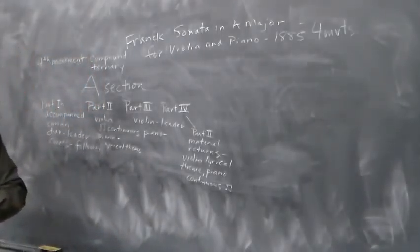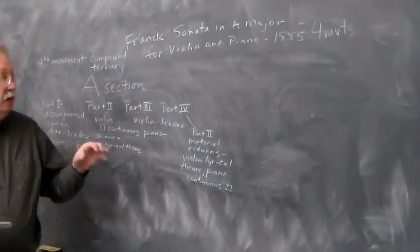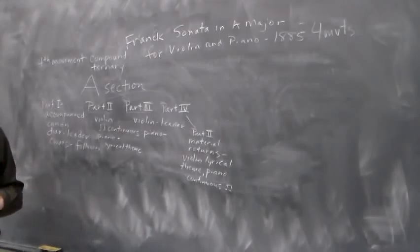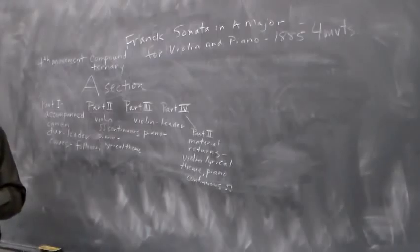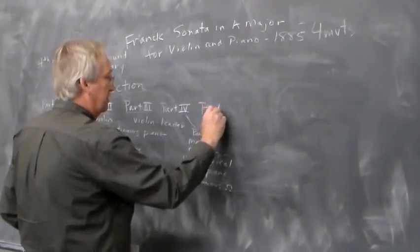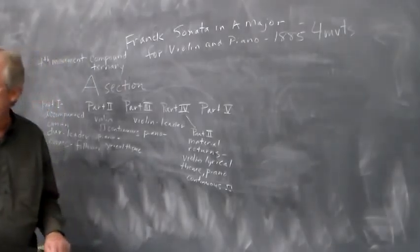Okay, so that's what happens there by B. And then the final section of this opening A idea occurs in the second system of page 33 and now the piano is the leader again and it is in the tenor voice, so in the left hand. And the violin then enters an octave higher and so you have then again this canon. And so that's part five, which is the same basic idea as part three and part one.